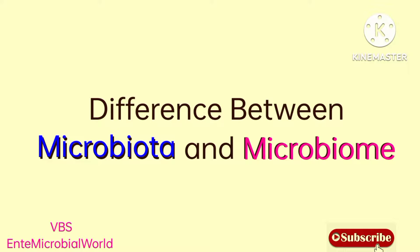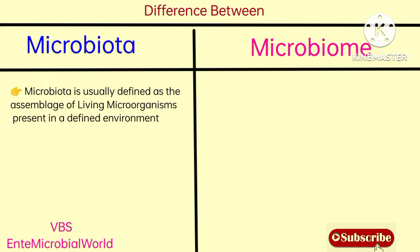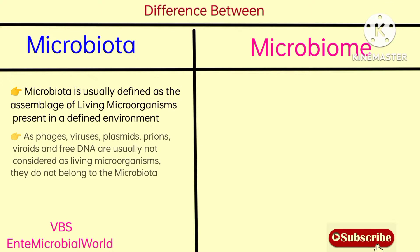The difference between microbiota and microbiome: microbiota is usually defined as the assemblage of living microorganisms present in a defined environment. As phages, viruses, plasmids, prions, viroids, and free DNA are usually not considered living microorganisms, they do not belong to the microbiota.